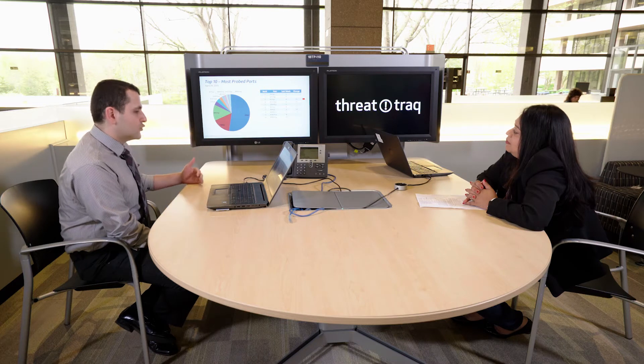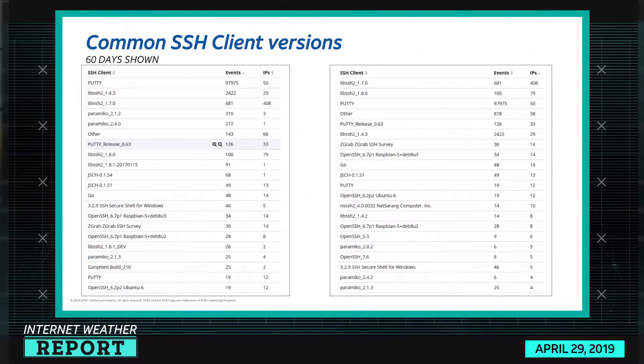This week I picked port 22 TCP — the SSH port. Usually with SSH it's an encrypted channel and you don't really know what's happening there. But if you have a honeypot or something like that, you might be able to see what kinds of clients are connecting to you. Looking at the last 60 days of our honeypot data, I can see what type of client is connecting most of the time.